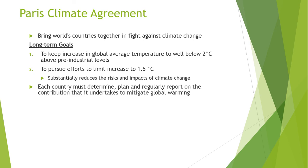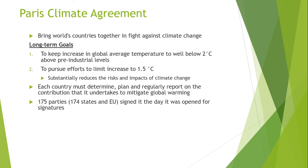To mitigate the effects of global warming, the Paris Climate Agreement was made, bringing world countries together in the fight against climatic changes due to global warming. The long-term goals of the Paris Climate Agreement are to keep the increase in global average temperature to well below 2 degrees centigrade above pre-industrial levels, and to pursue efforts to limit the increase to 1.5 degrees centigrade, substantially reducing the risks and impacts associated with climatic change.